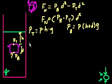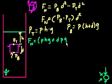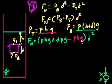Let's substitute both back into our net force equation. The pressure at the bottom expands to ρhg plus dρg. Minus the pressure at the top, which is ρhg. All of that times d squared. We can see immediately that the ρhg terms cancel out, leaving us with just dρg times d squared.